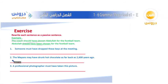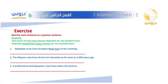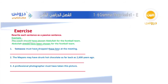Number one: Someone must have dropped these keys at the meeting. The object is 'these keys.' We drop 'someone' and make the object the subject, adding 'been.' Answer: These keys must have been dropped at the meeting.